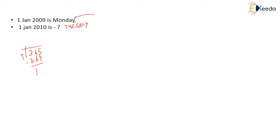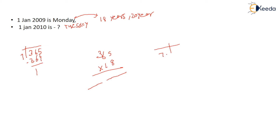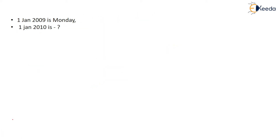But if the gap is 18 or 20 years, what will you do? You'd keep calculating a huge number, divide by 7, find the exact remainder — and if the date is something like 13 January, even a one-day mistake will spoil your answer. So this method is not feasible at all.